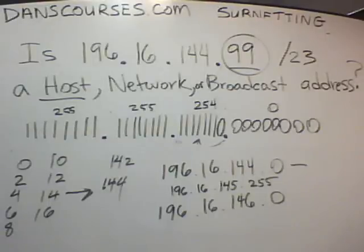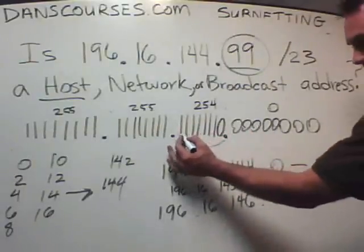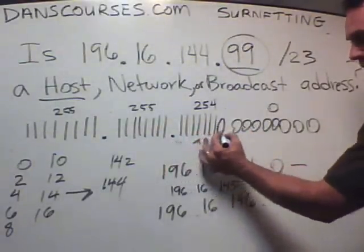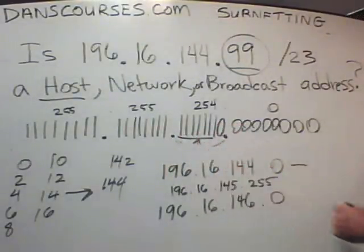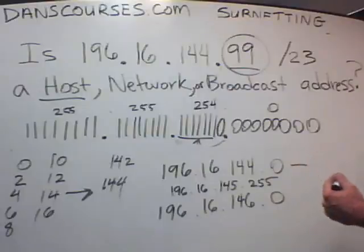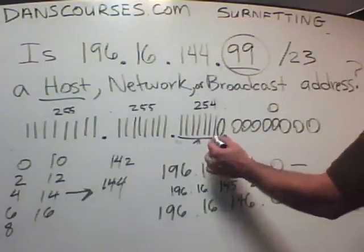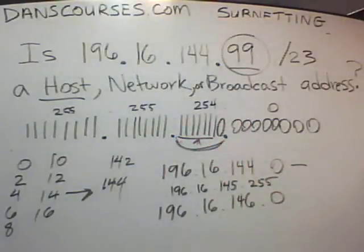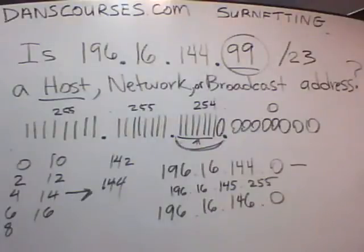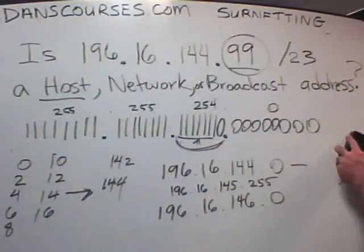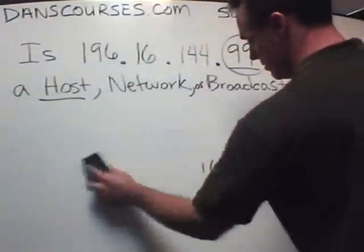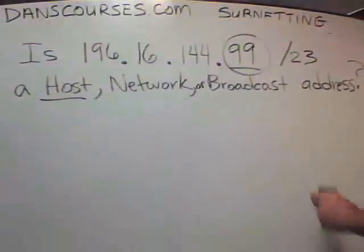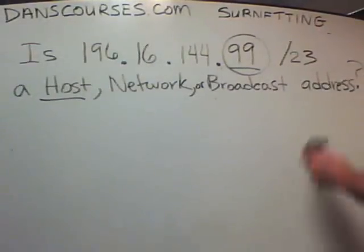That's how it works. The octet of interest is where the ones end and where we borrowed the ones. We have a zero here, so we borrowed seven bits from the third octet — that's the octet of interest, where our subnetting is occurring. Is that helpful? Let's answer another question. How much time do we have left in this video?